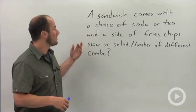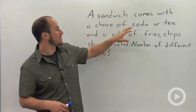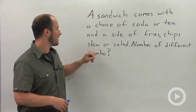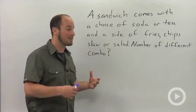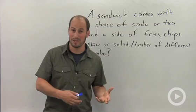So if you buy a sandwich, you can get a choice of a soda or tea and a side of fries, chips, slaw or salad. And we're trying to figure out the number of different combinations that you can get for this particular problem.